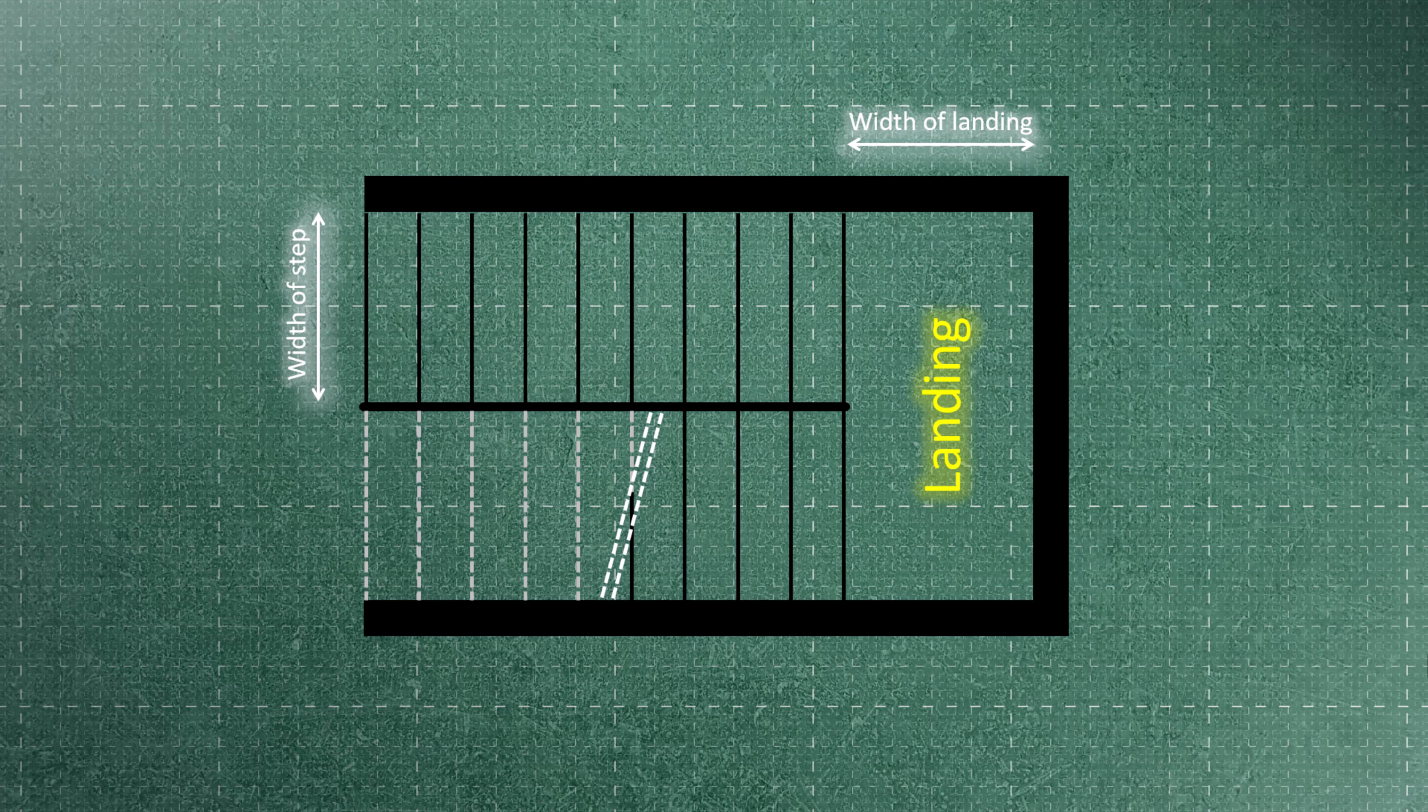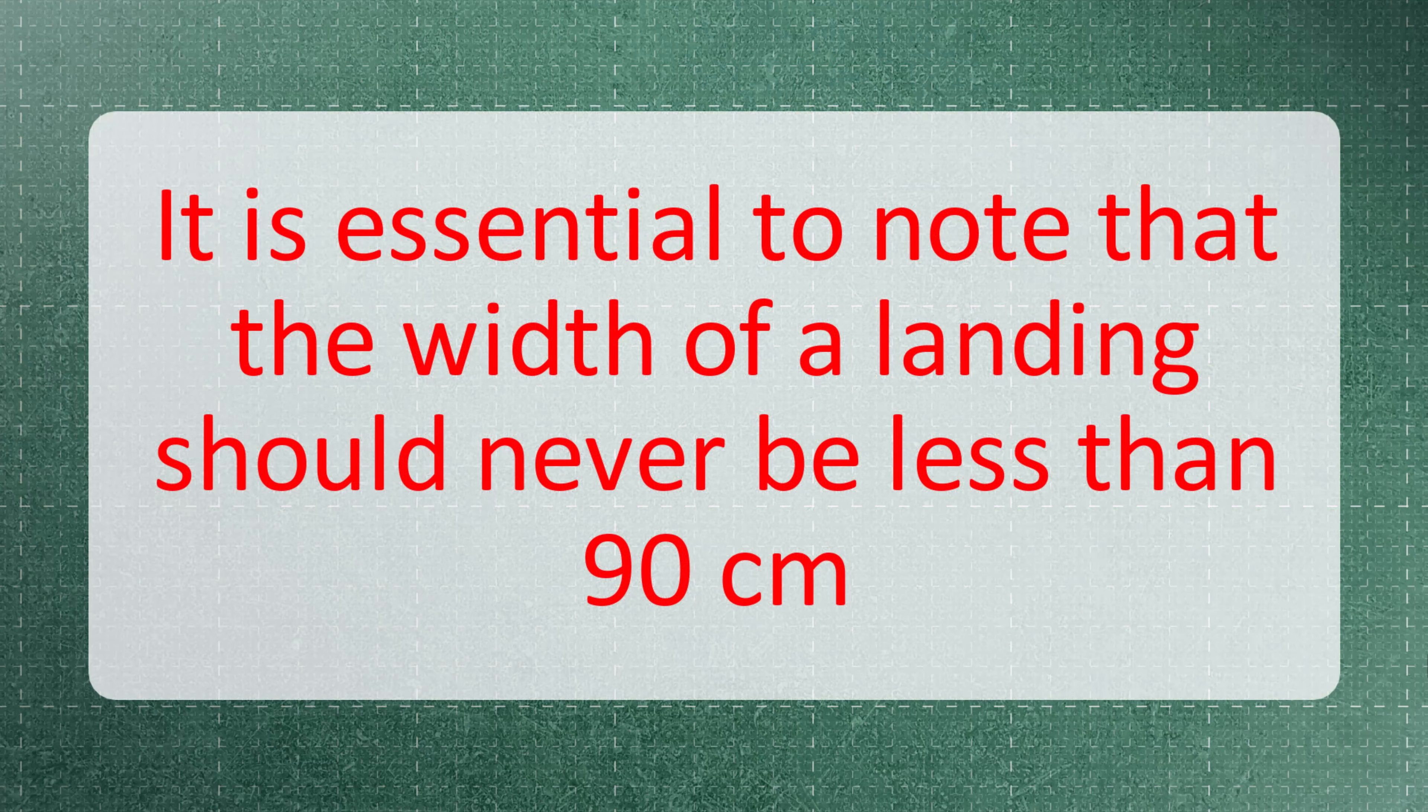The width of the landing should always be equal to or greater than the width of a step. Therefore, if the width of the landing is denoted as A and the width of the stairs is B, A must always be equal to or greater than B. It is essential to note that the width of the landing should never be less than 90 centimeters.